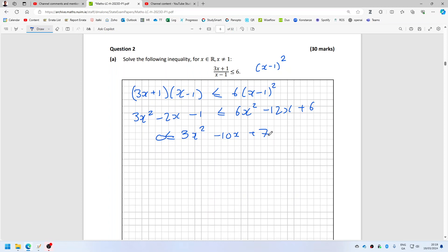Can we factorize that? We can indeed. So that's 3x minus 7 and x minus 1.